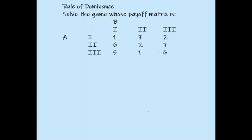Let us take an example of a payoff matrix where the players are A and B. It is A's payoff matrix because A is on the left hand side and B is on the top side. The strategies of A are 1 to n and that of B also 1 to n.